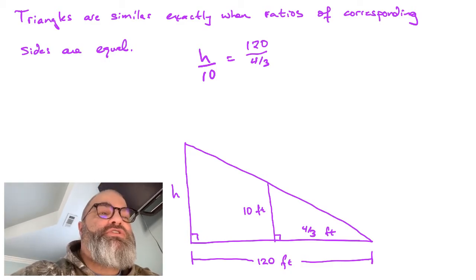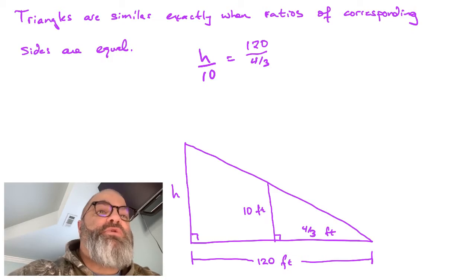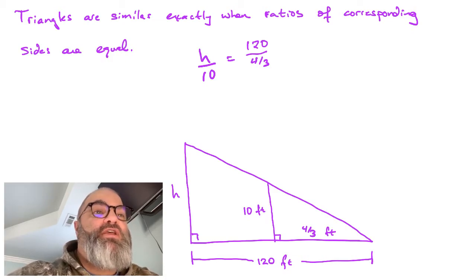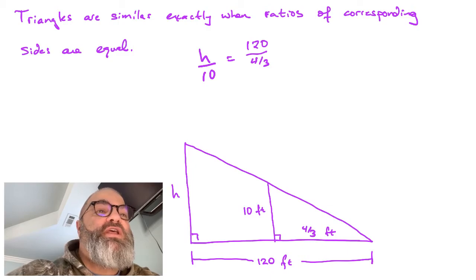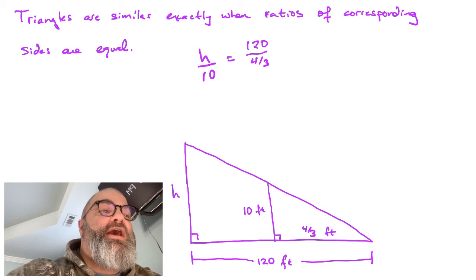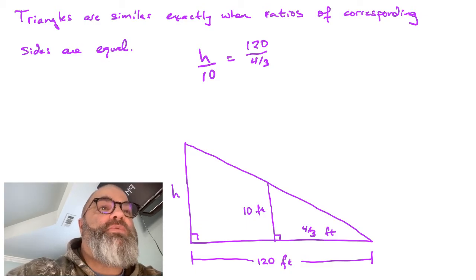When we look at those two ratios of corresponding sides, similar triangles mean that those are going to be equal. And that gives us an equation that we are then able to solve for H and figure out what the height of that tower is going to be.